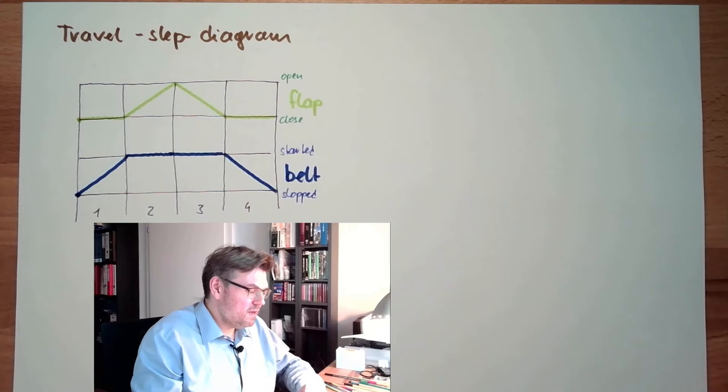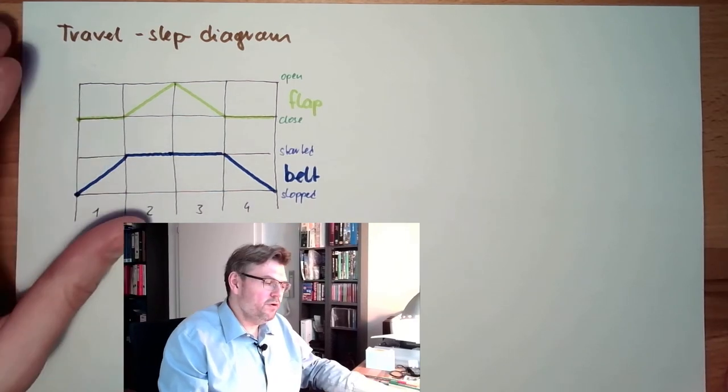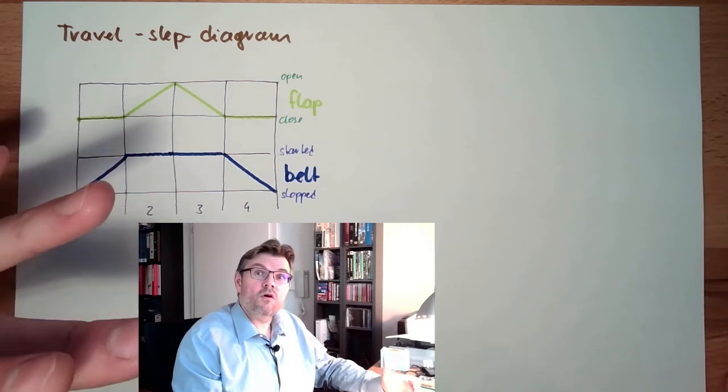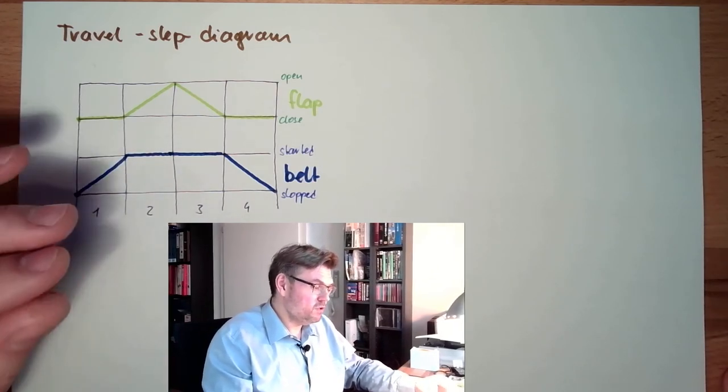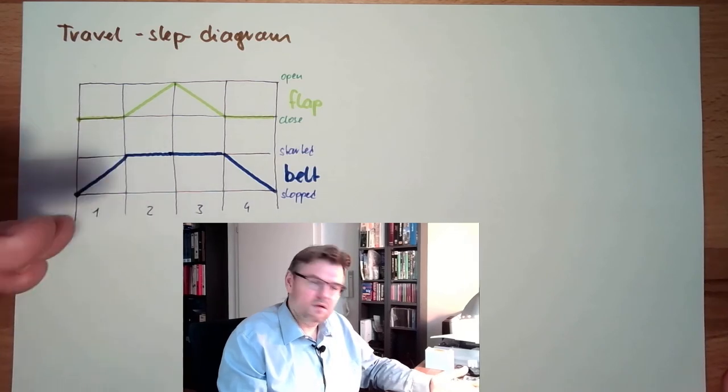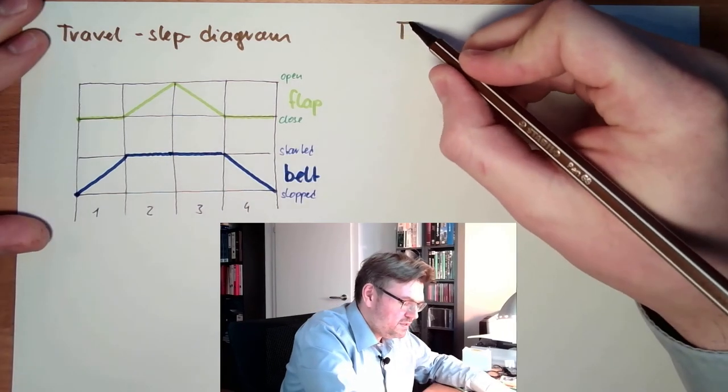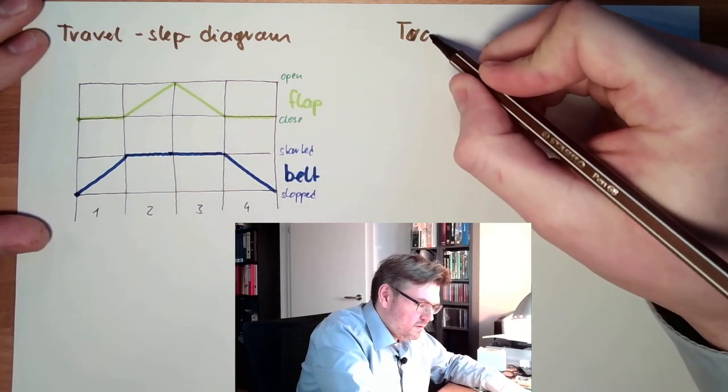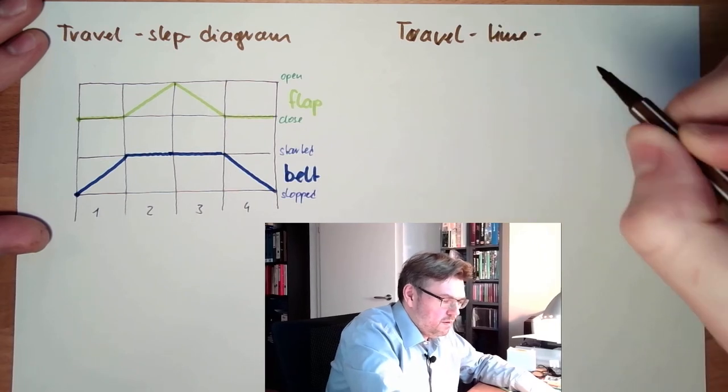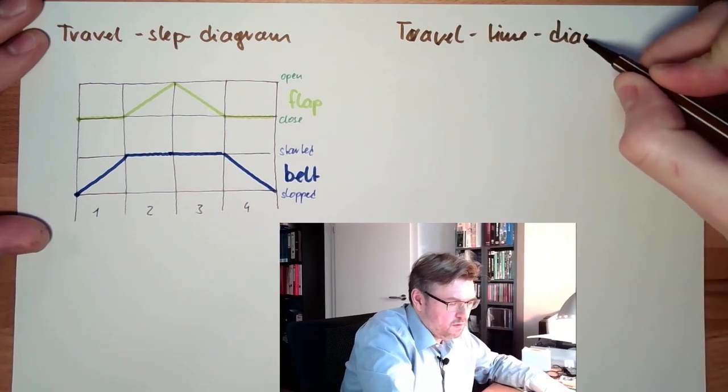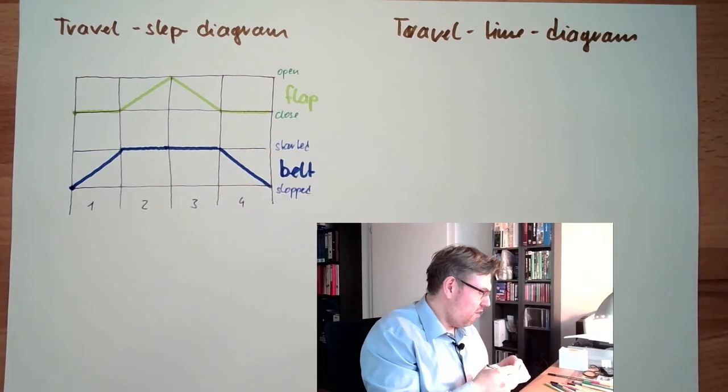What is not that good maybe is I don't really know how long this takes. During commissioning, when you turn on the thing the first time, it might be difficult to distinguish, is this still normal? So there is also the travel time diagram, which is exactly the travel time diagram, which actually is pretty much the same.